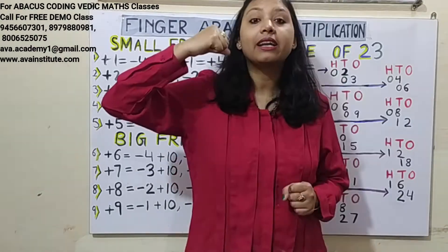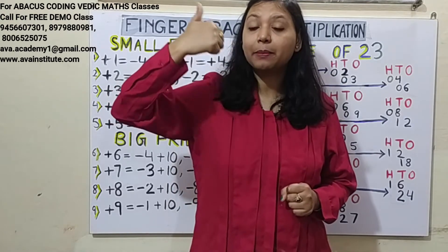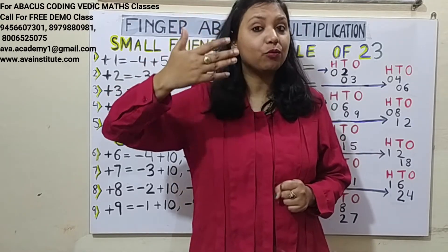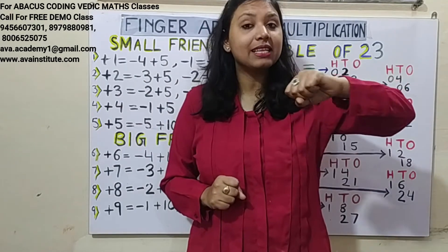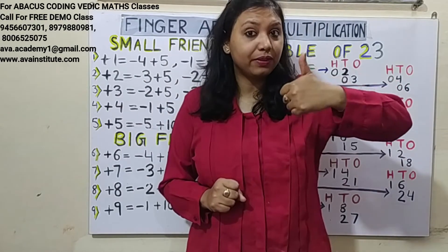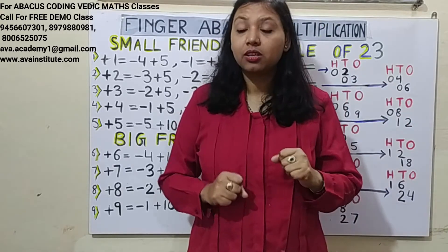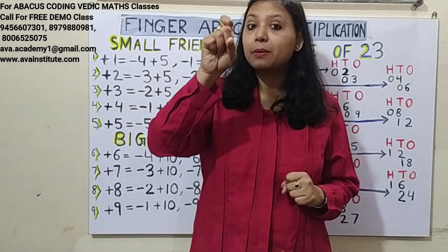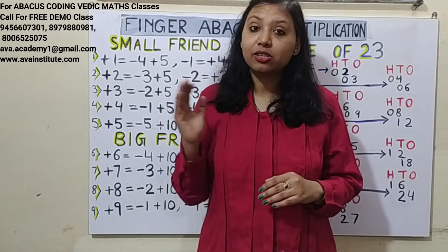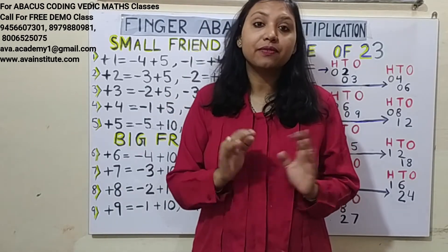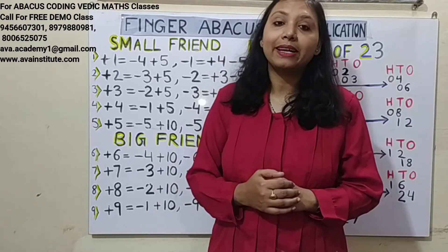Let us now start. Our right hand is our 1's place. In the right hand, the value of the thumb is 5 and the value of each finger is 1. The left hand is our 10's place; the value of the thumb here is 50 and each finger is 10. In the right hand only, we also represent 100's. Please watch my finger abacus addition and subtraction series to learn better.